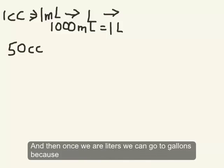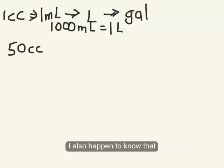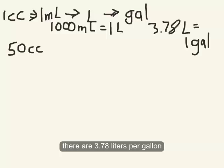And then once we're in liters, we can go to gallons, because I also happen to know that there are 3.78 liters per gallon. So we have our game plan, cubic centimeters to milliliters to liters to gallons.